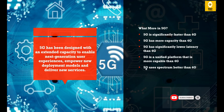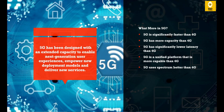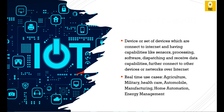5G uses spectrum better than 4G. Spectrum is a radio frequency range — from around 6 GHz up to 24 GHz and above — used for communication. This wider spectrum range makes 5G more reliable than previous generations. Now let's move on to discuss IoT.